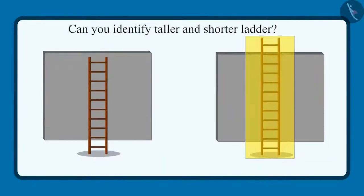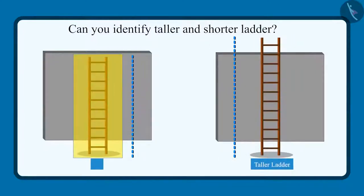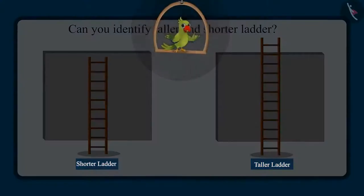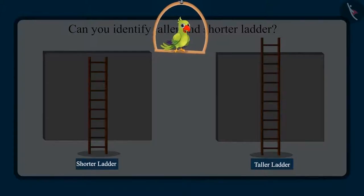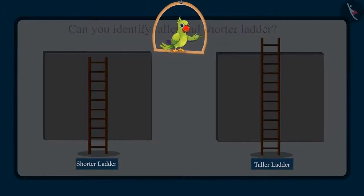And out of these two ladders, this ladder is taller and this ladder is shorter. So children, I hope that you enjoyed identifying and comparing taller and shorter objects. Now you can identify the tall and short objects around you and compare them to tell which is taller and which one is shorter.